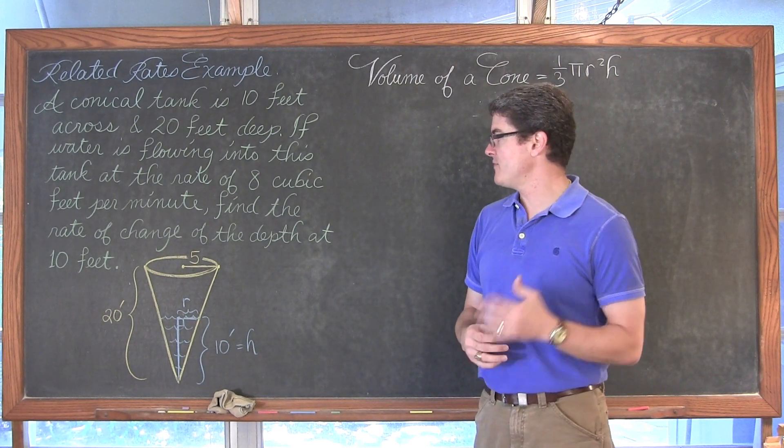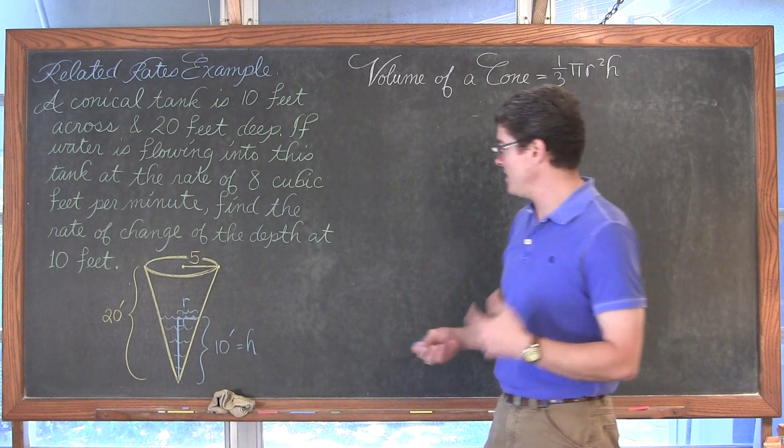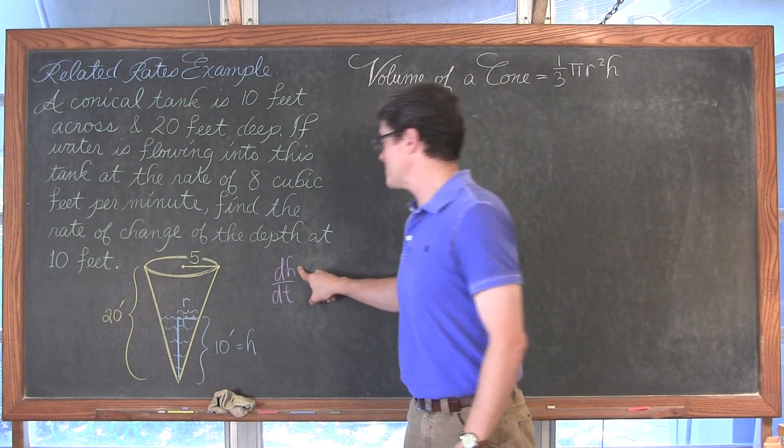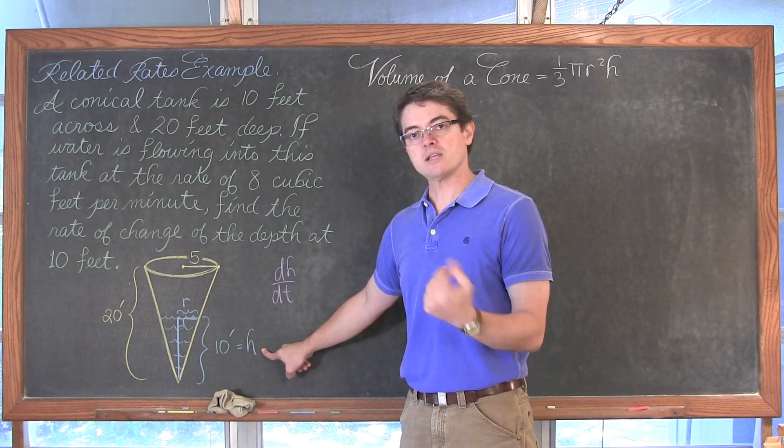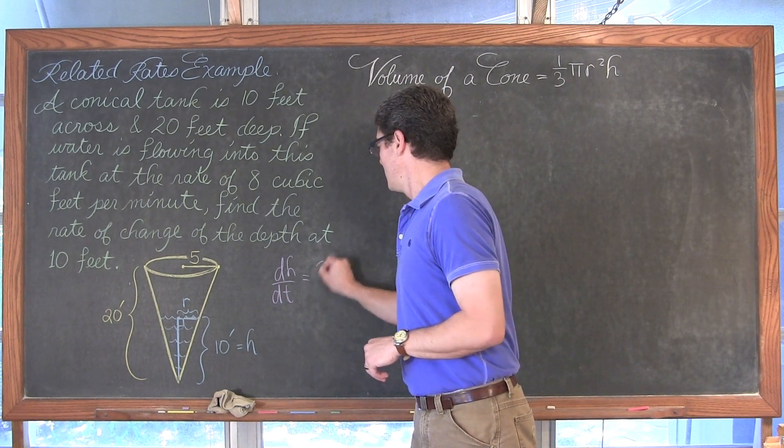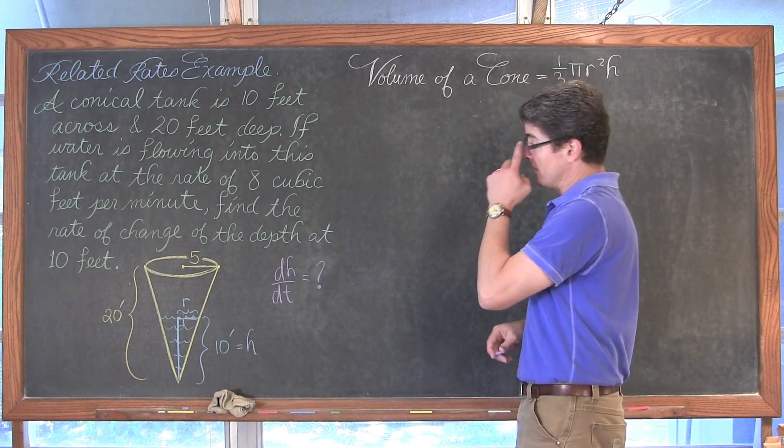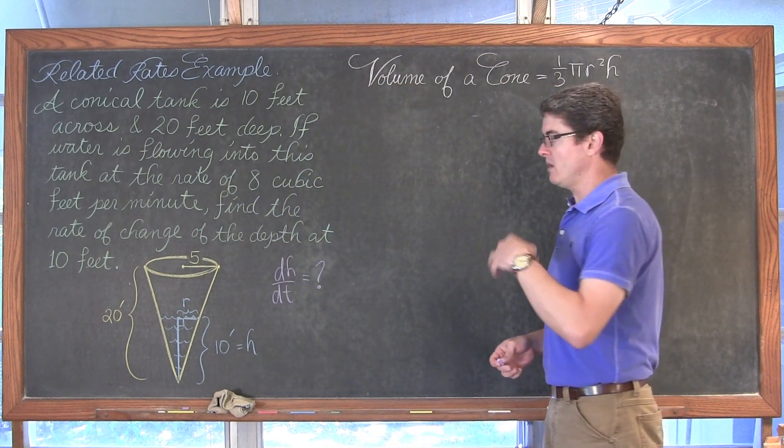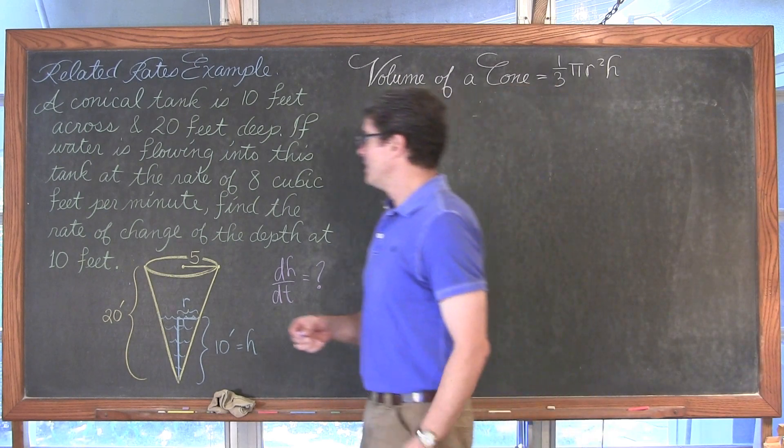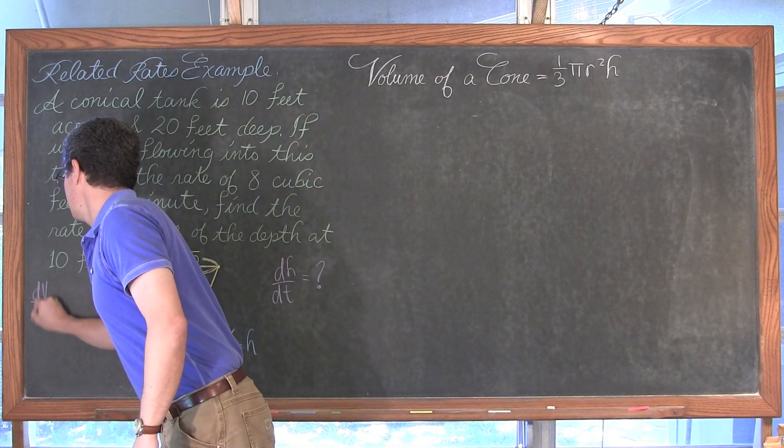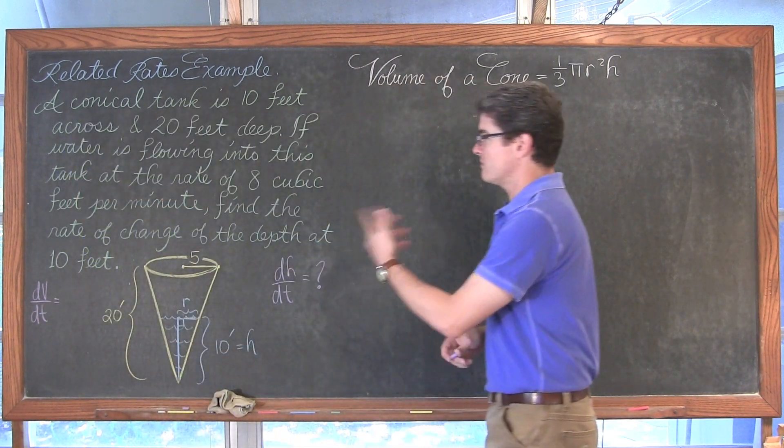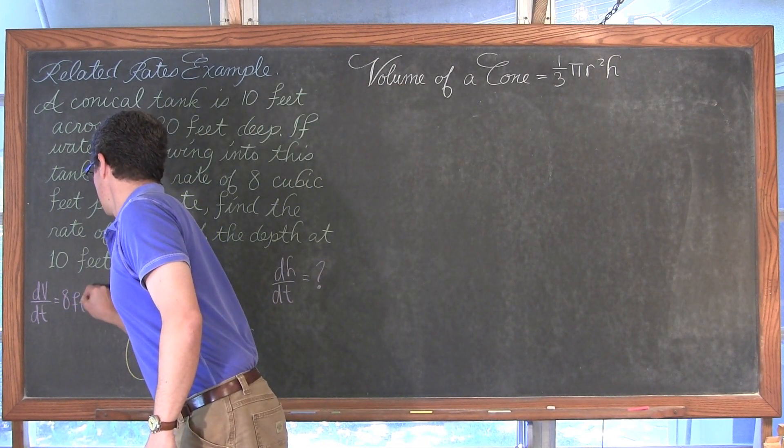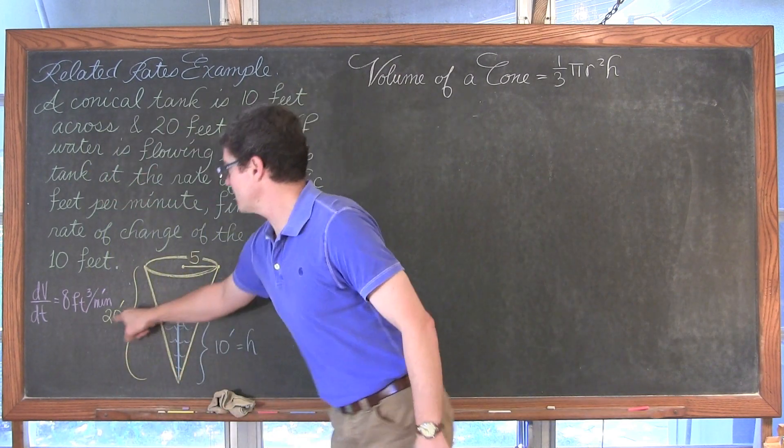Well it says find the rate of change of the depth of the water when it is ten feet. So we are going to be looking for a rate of change, that means derivative. So we are going to be looking for dh/dt. What is the rate of change for the height at some particular point in time? That is going to be set by the fact that the water is ten feet deep. Well what else are we given? We are saying that we are putting water into the tank at eight cubic feet per minute. Well that is volume. So the rate of change for volume dv/dt is equal to eight cubic feet per minute.